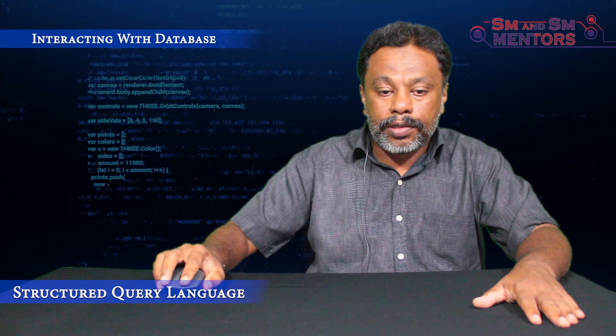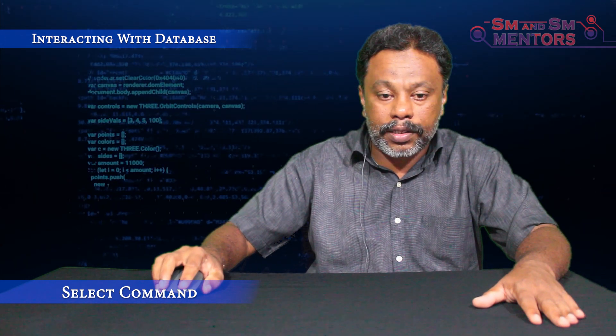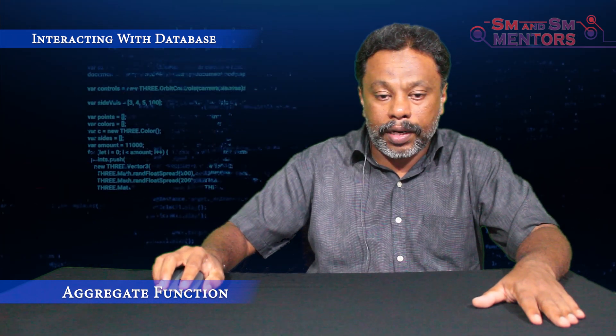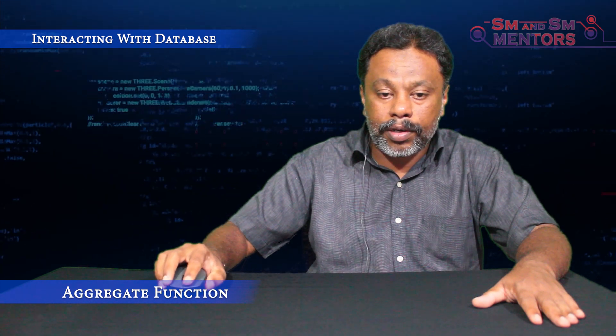The most important SQL command is the SELECT command, which is used to retrieve and display data from the database. What is an aggregate function? An aggregate function is used for statistical analysis. For example, from a set of salaries like $100 or $120, you can get the average salary, the highest salary, or the lowest salary. The aggregate functions are: MAX, MIN, SUM, AVG, and COUNT — these are used for statistical analysis.